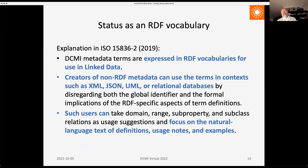It's no longer controversial that DCMI metadata terms is an RDF vocabulary. As explained in ISO 15836, published in 2019, DCMI metadata terms are expressed in RDF vocabularies for use in linked data, but creators of non-RDF metadata can use the terms in contexts such as XML, JSON, UML, or relational databases by focusing on the natural language text of definitions, usage notes, and examples. The Usage Board has pursued a policy of cautious expansion, providing broadly applicable terms and making some exceptions to fill gaps in application profiles. We've kept the overall vocabulary small so that it is maintainable with limited resources and relatively coherent.